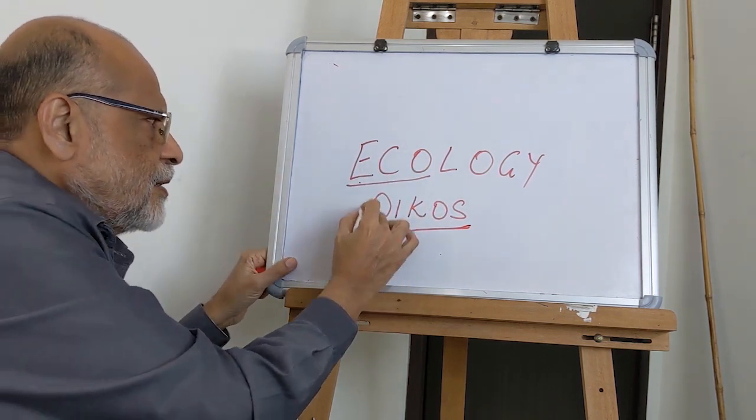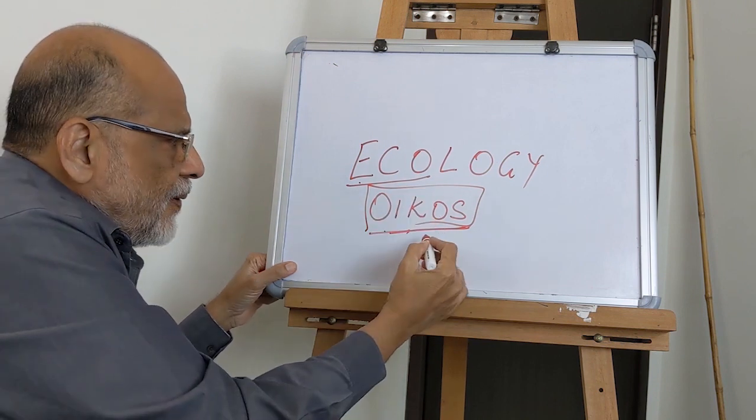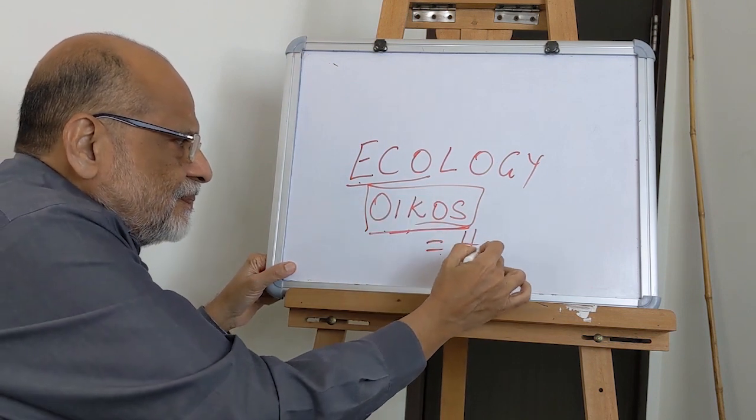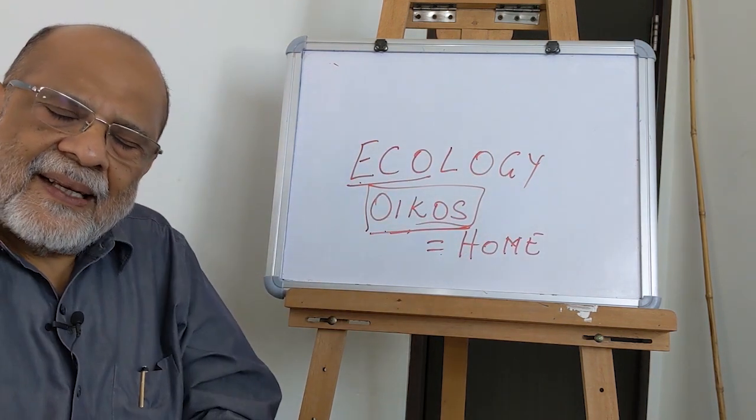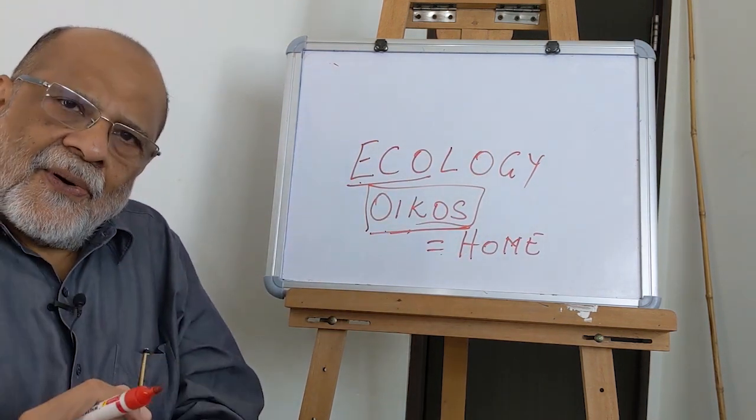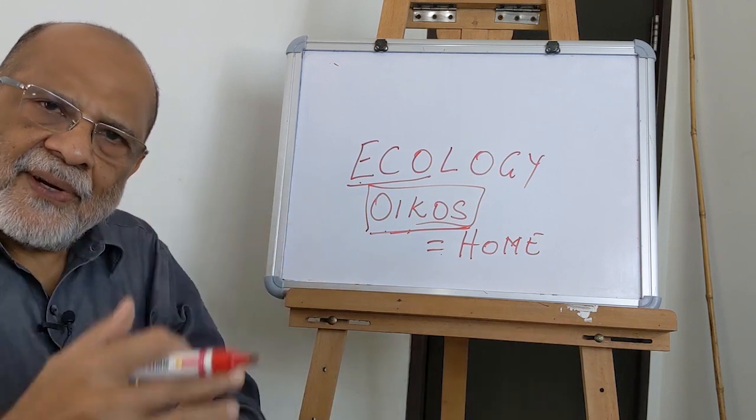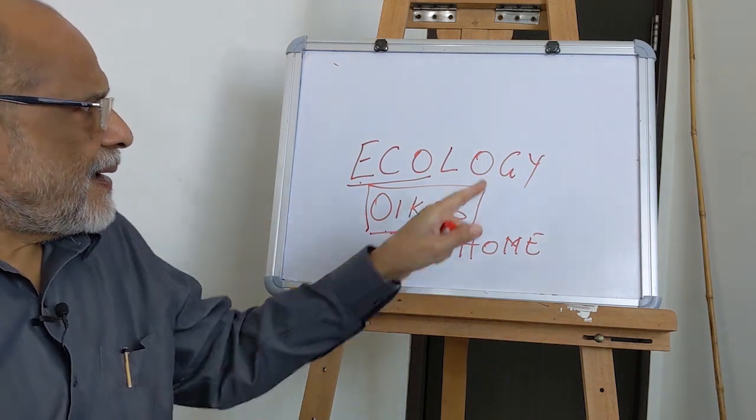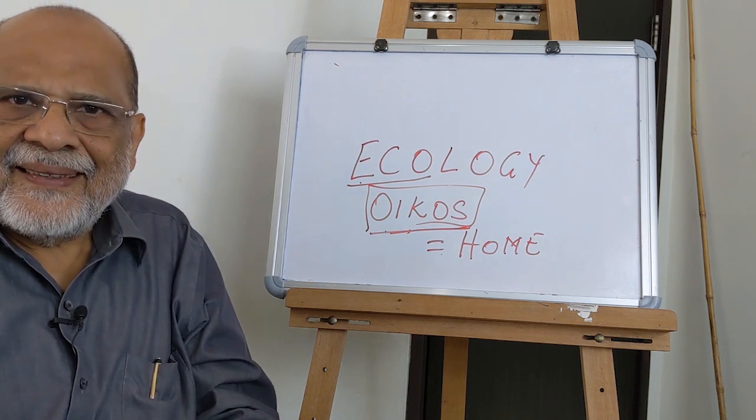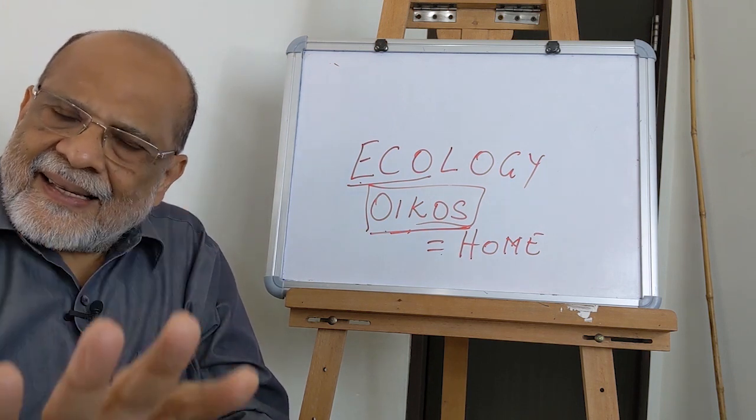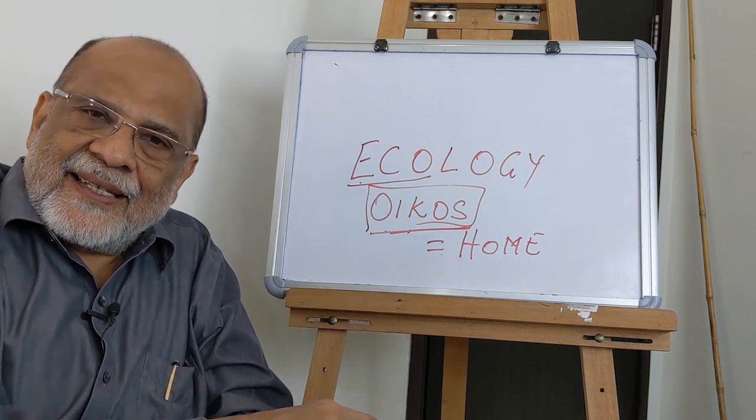this word E-C-O is written in English as E-C-O. So what does this mean? The word E-C-O means home. Home. Just like our own home, the entire universe is a home. And Logi is study. Studying the home is ecology. You got my point? Yes. Studying the home is ecology.